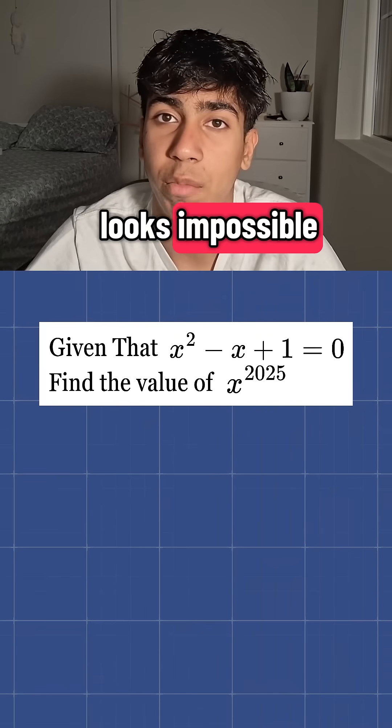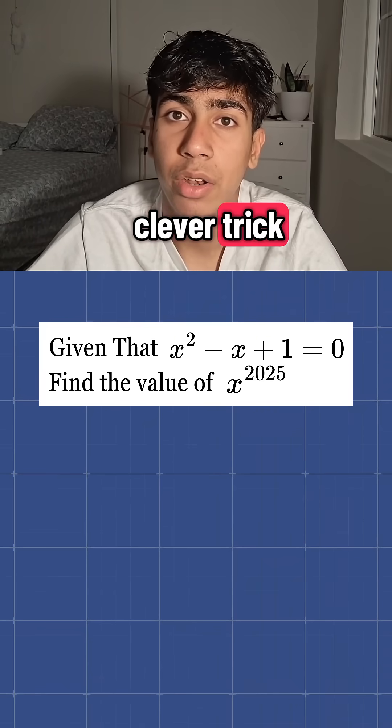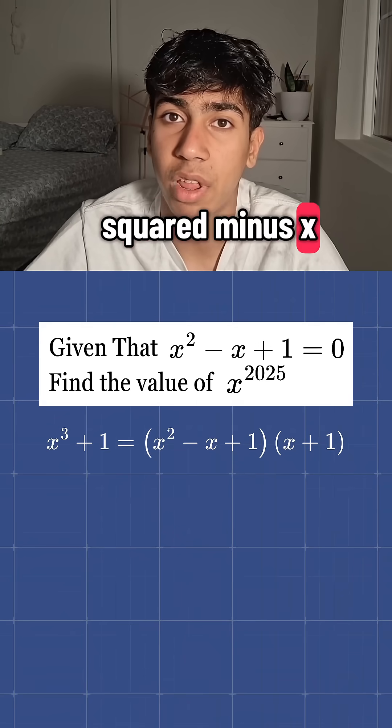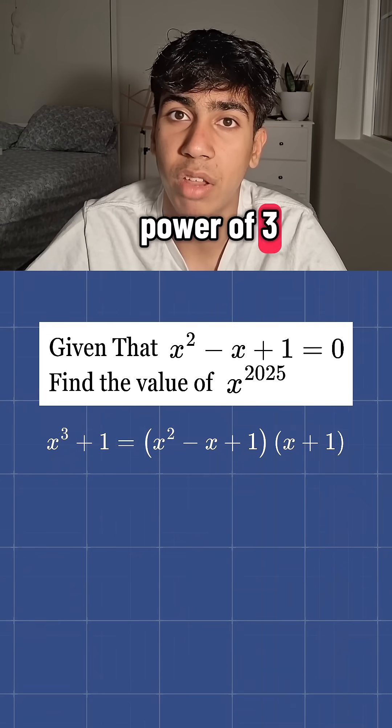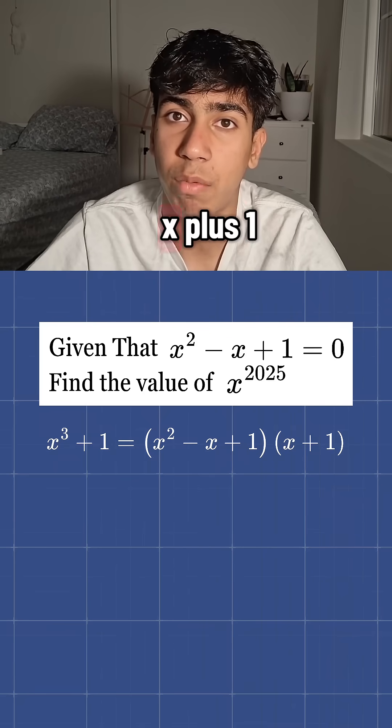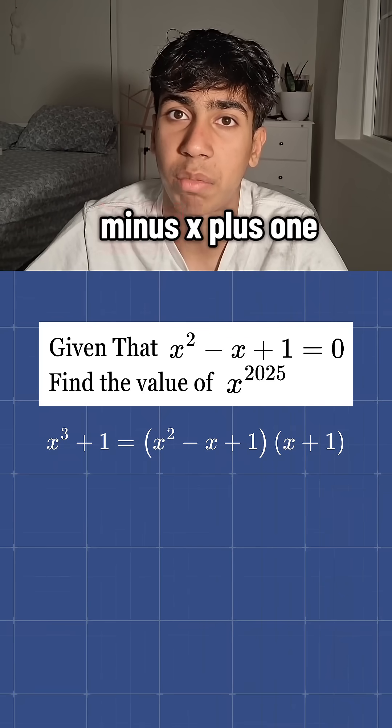At first, this looks impossible, but here's a clever trick. Notice that x squared minus x plus 1 is a factor of x to the power of 3 plus 1. This is because x to the power of 3 plus 1 is equal to x plus 1 times x squared minus x plus 1.